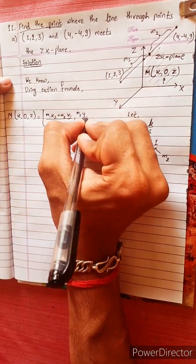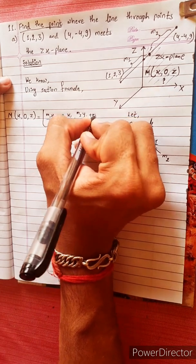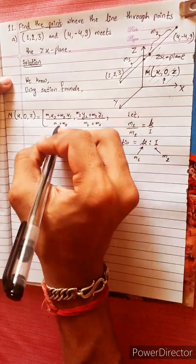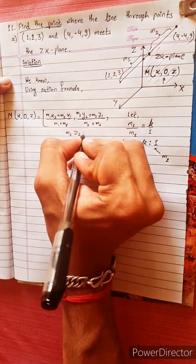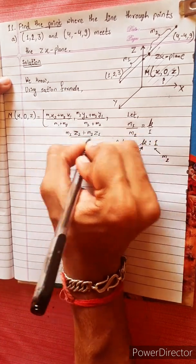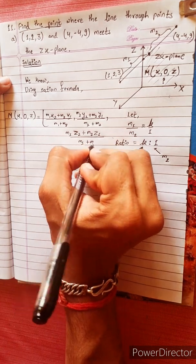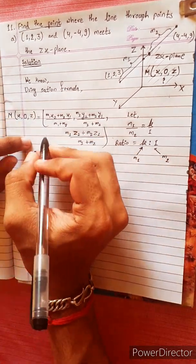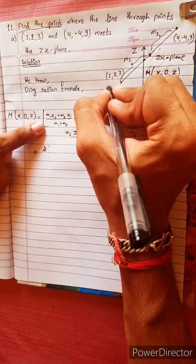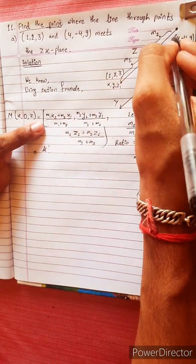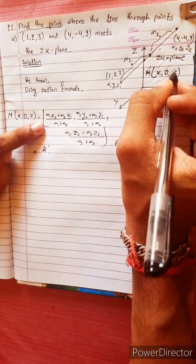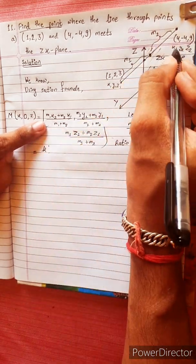M1·y2 plus M2·y1 divided by M1 plus M2, and M1·z2 plus M2·z1 divided by M1 plus M2. This is the section formula.